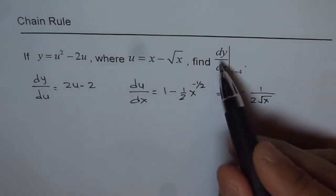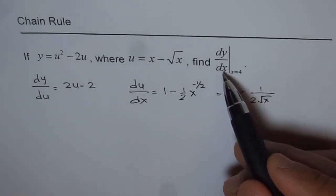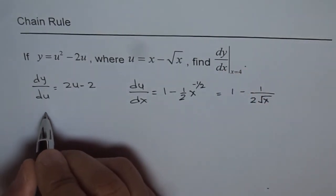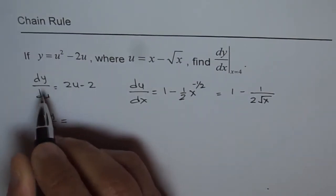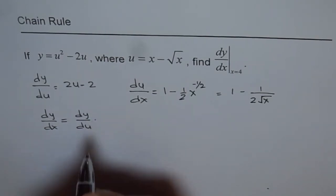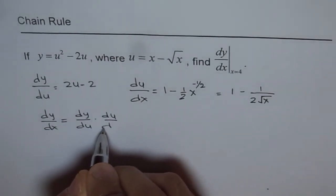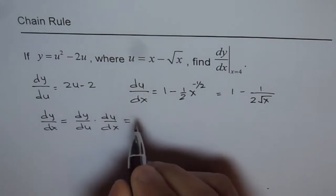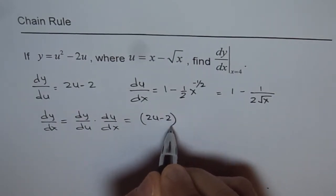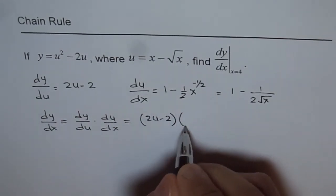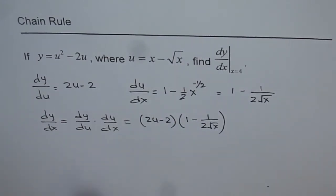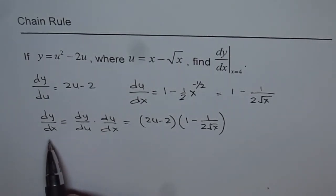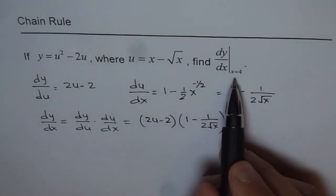Now we need to find dy/dx. Applying the chain rule, we get dy/dx equals dy/du times du/dx, which is (2u minus 2) times (1 minus 1 over 2 square root of x). We have the expression for dy/dx, but we want to evaluate it at x equals 4.